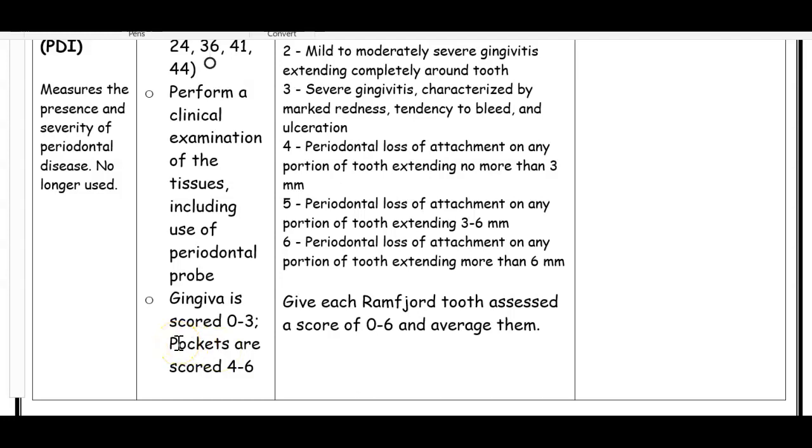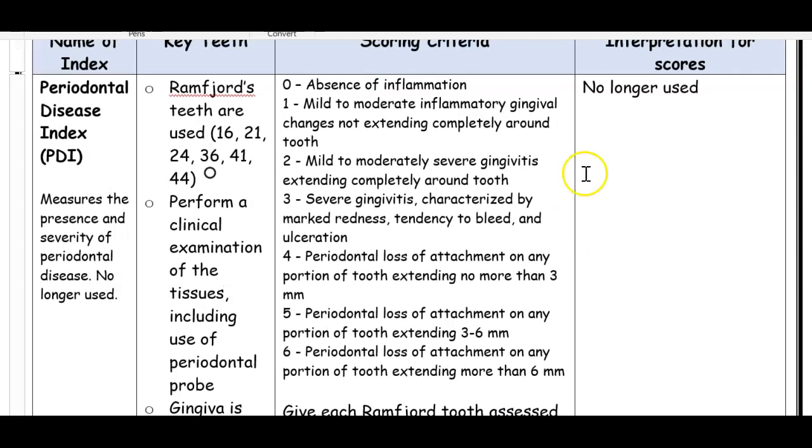They gave each tooth a score from 0 to 6, then averaged them to come up with a PDI score. You can see here the ranges from 0 to 6. If they had just gingivitis, it would be 0 to 3. If they had periodontitis, it would be 4 to 6. Depending on the tooth they were looking at, it would be scored appropriately. There are ranges for gingivitis and periodontitis, then they would average the score. That's no longer used, so I don't want you to worry about this too much.